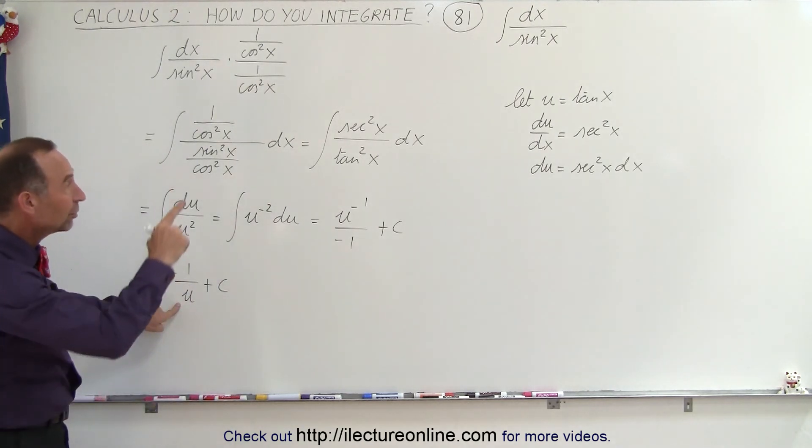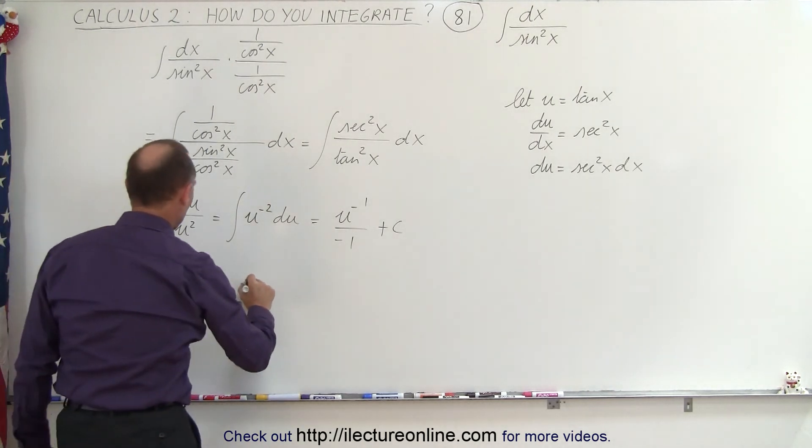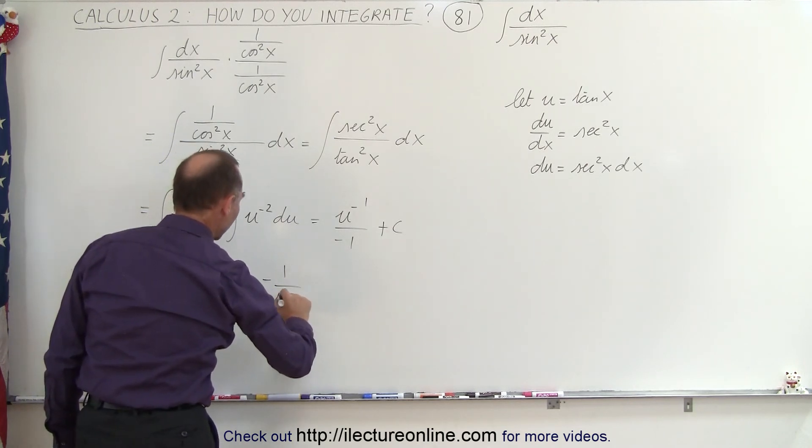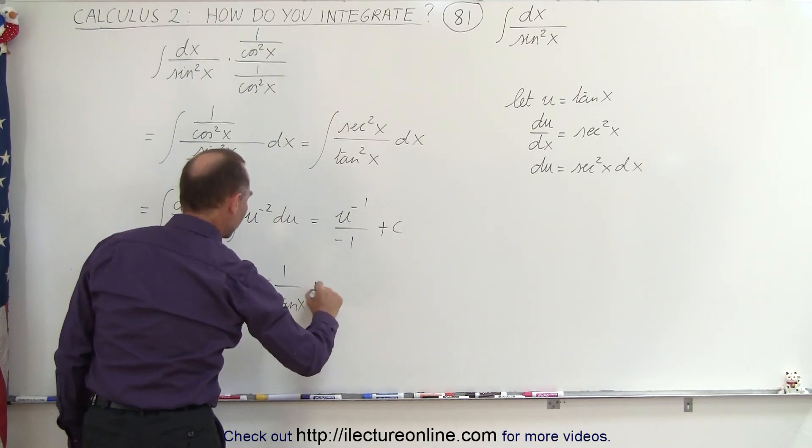And of course, since u is equal to the tangent of x, this can be written as minus 1 over the tangent of x plus a constant of integration.